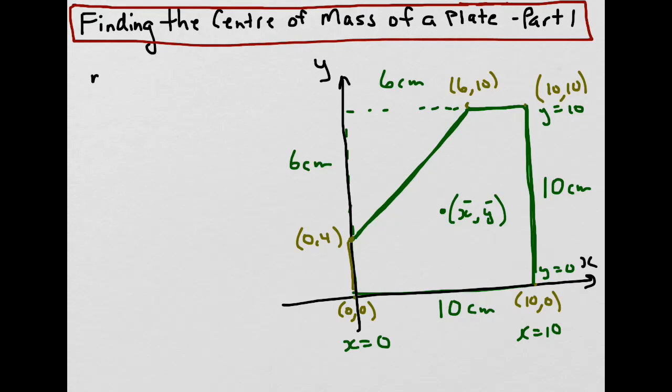First, slope m would be y2 - y1 divided by x2 - x1, which gives us 6 over 6, which gives us a slope of 1.